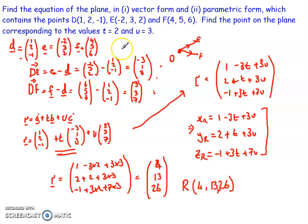By changing the values of T and U we get different points R upon the plane. We've defined the entire three-dimensional surface using these parameters. This is just another way of defining the equation of a plane that comes in handy for a lot of the work and more complex calculations we'll cover later in the course.